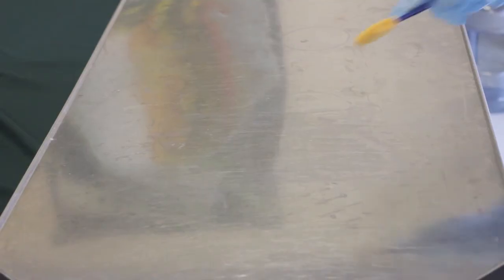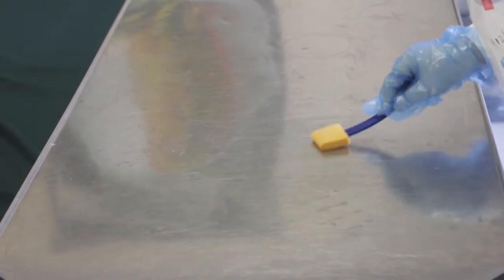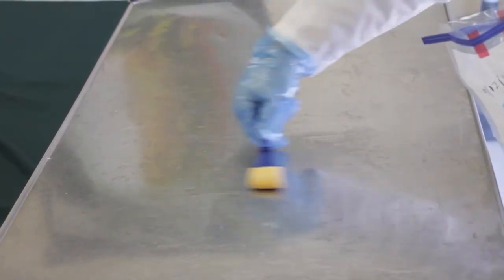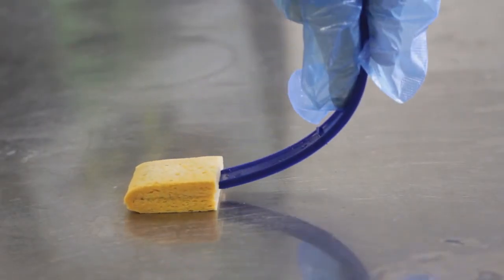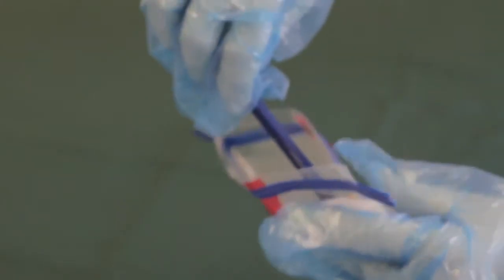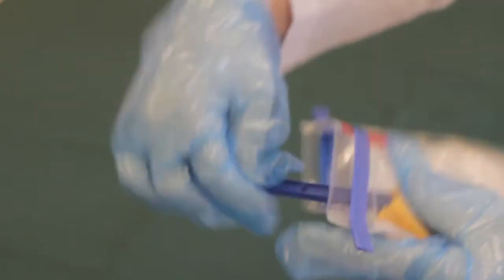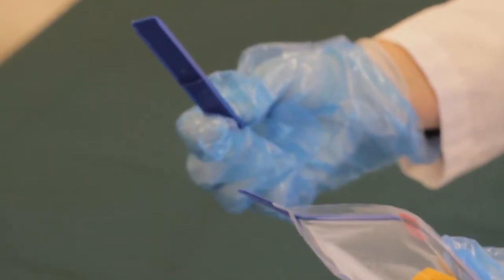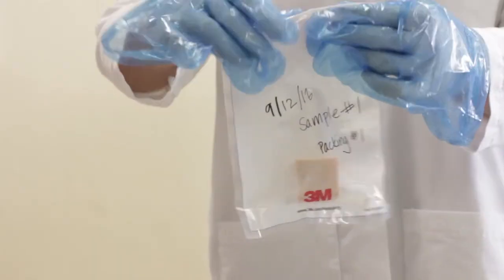On large and flat surfaces, swab a 4x4 or 12x12 inch area using a crosshatch pattern. Apply heavy pressure when swabbing to ensure that the sponge is picking up the sample from the environmental surface. After swabbing, return the sponge to the bag and bend the stick until it breaks off. Close the bag by rolling the top and folding over the tabs.